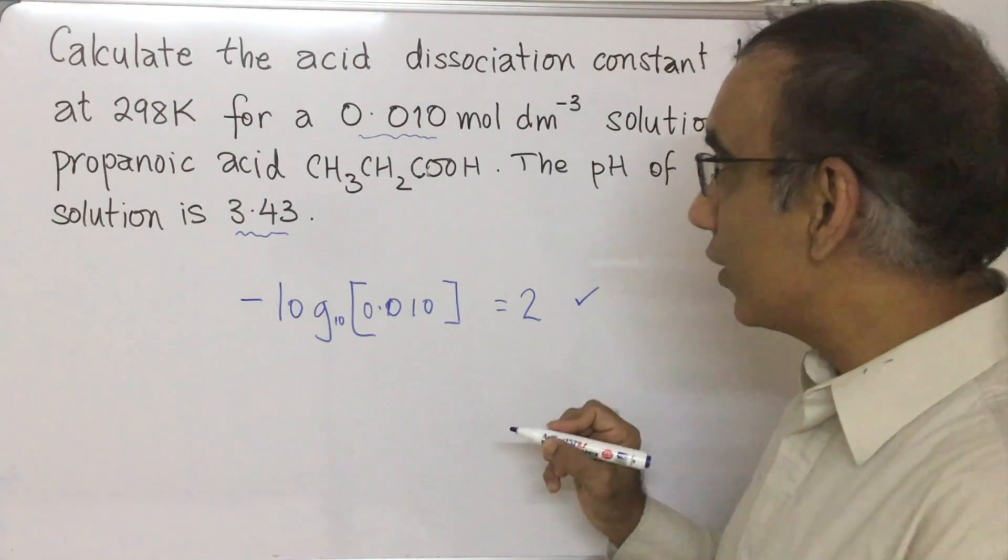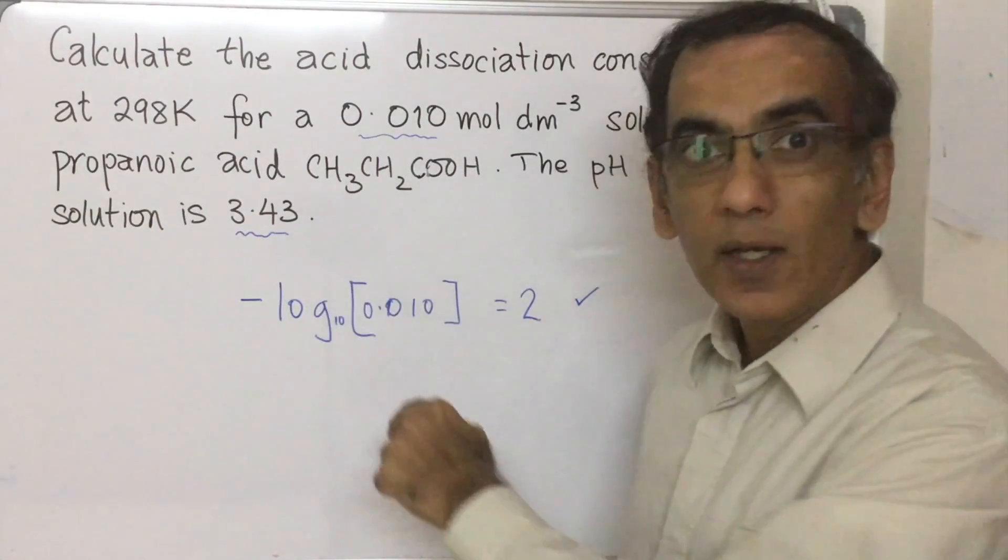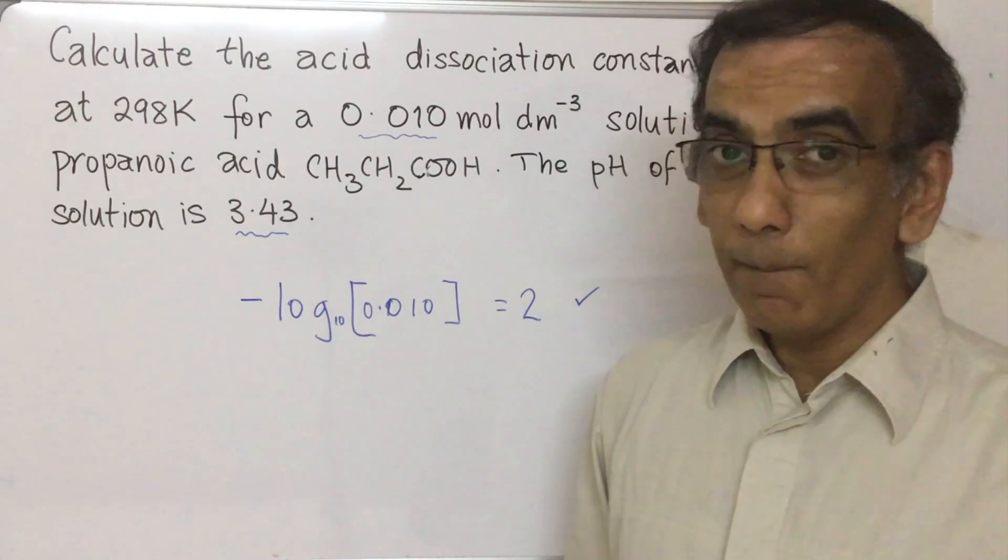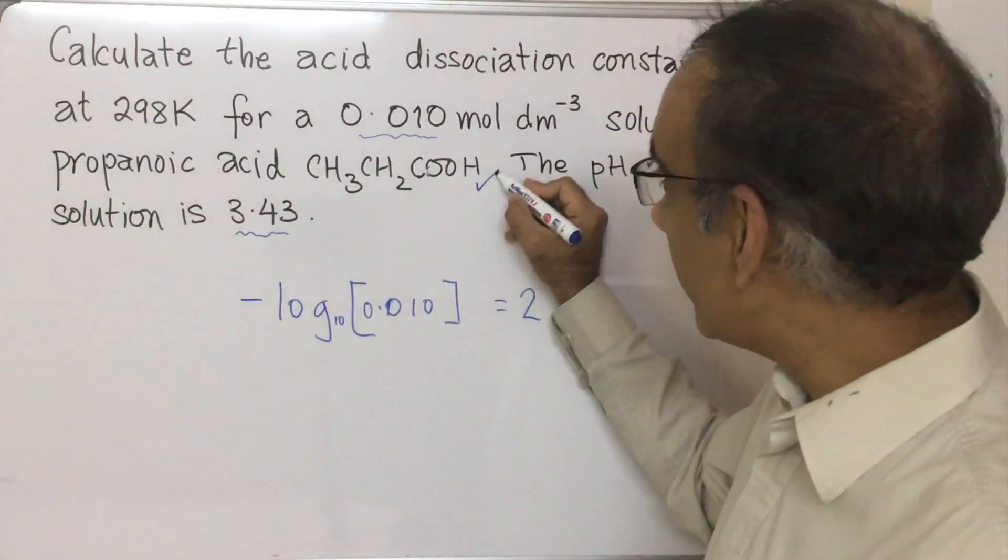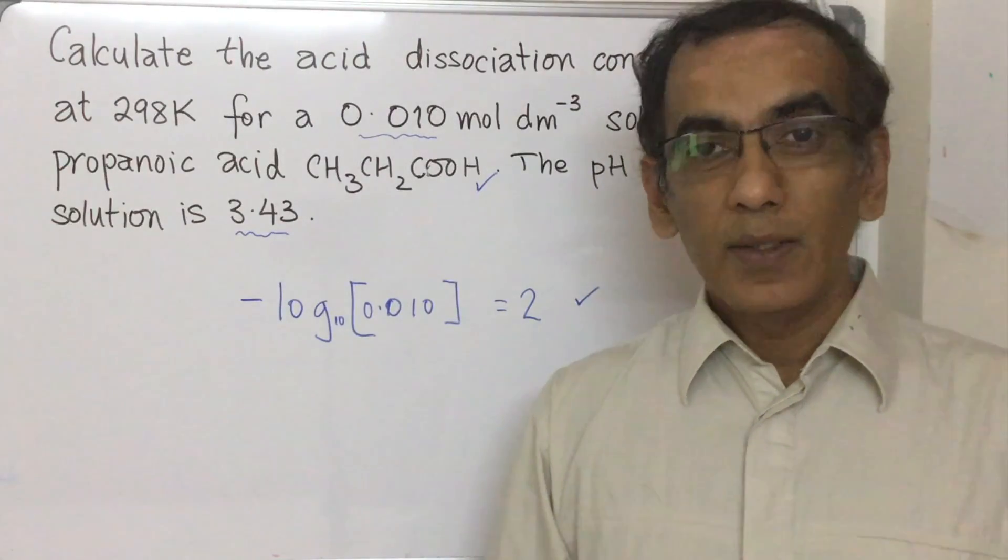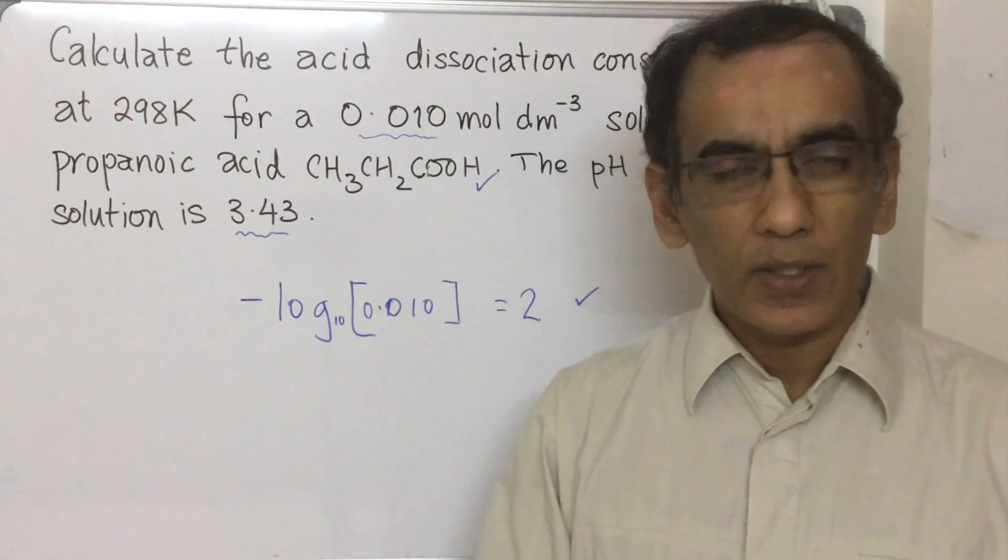If that were the concentration and this were a strong monoprotic acid like hydrochloric or nitric acids, but it's not. It's a weak acid which means it's not completely dissociated. So let's first consider what do we mean by not completely dissociated.